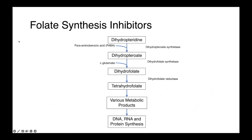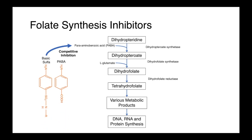This is the folate synthesis pathway, and what you can see is that the basic sulfonamide structure is very similar to paraminobenzoic acid. This is the native compound found within the cell. As a consequence of this, dihydropteroate synthetase can inadvertently incorporate the basic sulfa structure into this biosynthetic pathway in place of PABA.